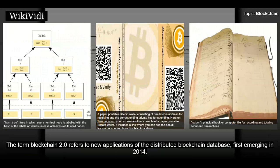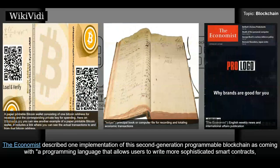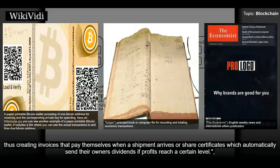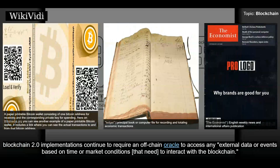The term blockchain 2.0 refers to new applications of the distributed blockchain database, first emerging in 2014. The Economist described one implementation of this second generation programmable blockchain as coming with a programming language that allows users to write more sophisticated smart contracts, thus creating invoices that pay themselves when a shipment arrives or share certificates which automatically send their owners dividends if profits reach a certain level. Blockchain 2.0 implementations continue to require an off-chain oracle to access any external data or events based on time or market conditions that need to interact with the blockchain.